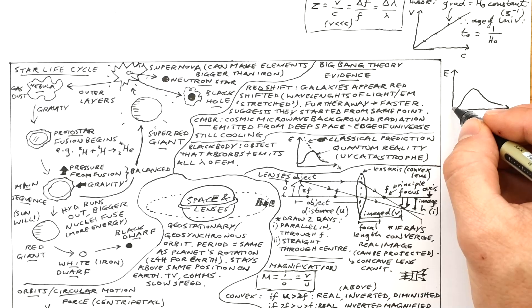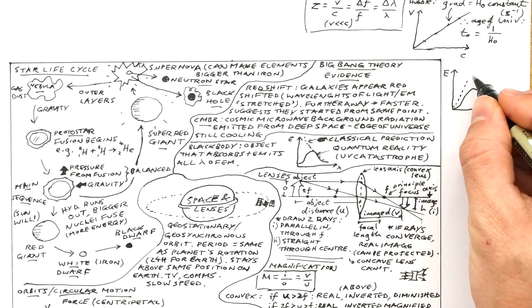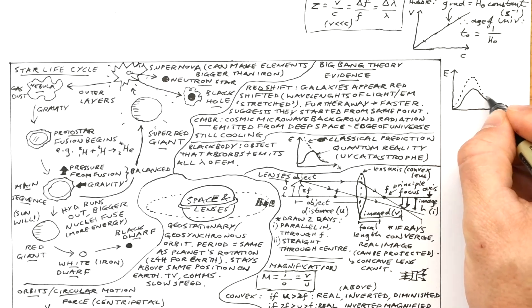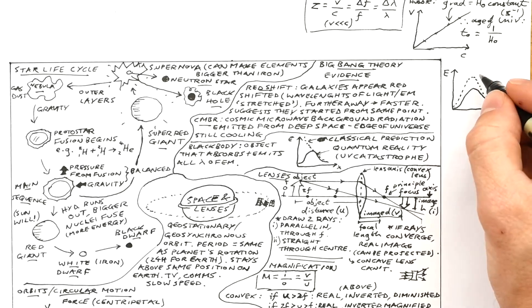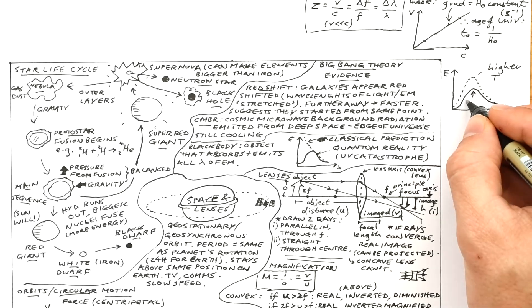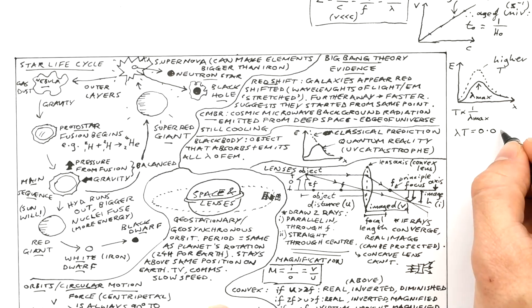Blackbody radiation. I've just drawn it the same again. But I've also drawn a dotted line to show what would happen if we have an object at a higher temperature. The peak goes up and to the left. Now that peak wavelength can give us the temperature of a star according to Wien's law. Lambda max times the temperature in Kelvin is equal to 0.0029.